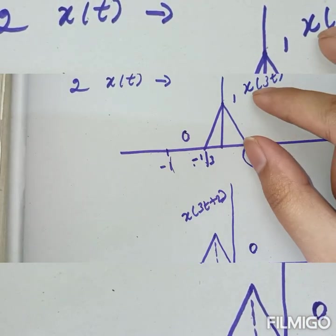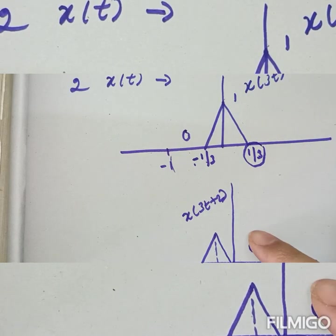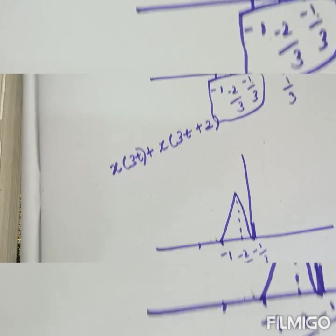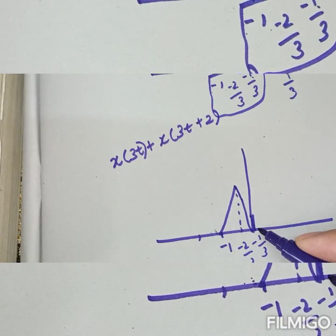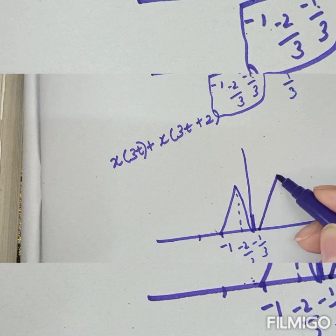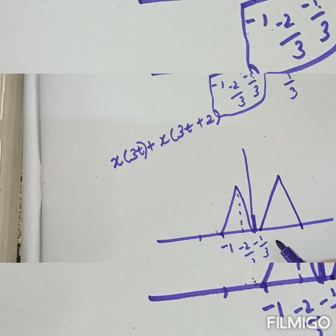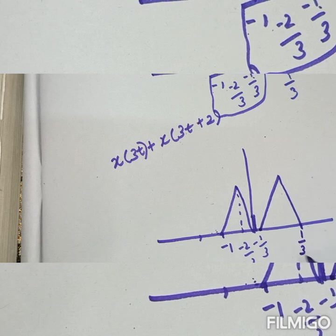Adding the two parts together: the result of x of 3t plus x of 3t plus 2 is a triangular signal that starts from minus 1 and goes to 1 by 3. This combined triangular signal is the answer.